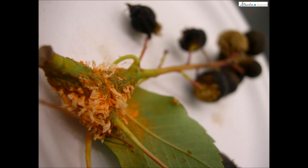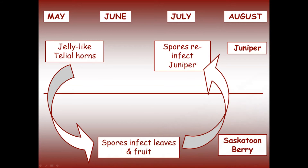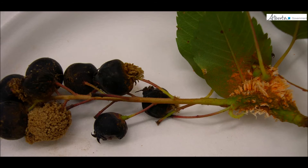Later in summer, in July and August, spores transfer back to infect junipers. Rust is managed on a small scale by removing whatever infected material you can find.